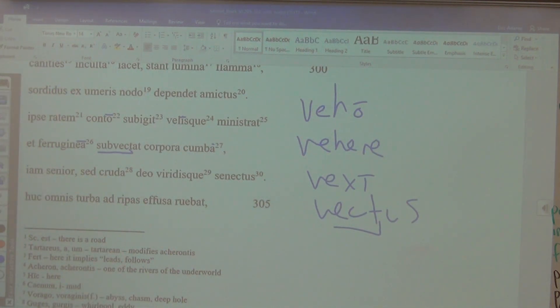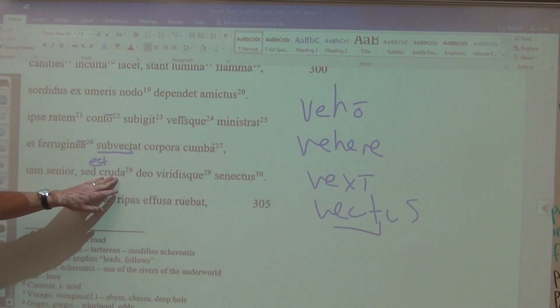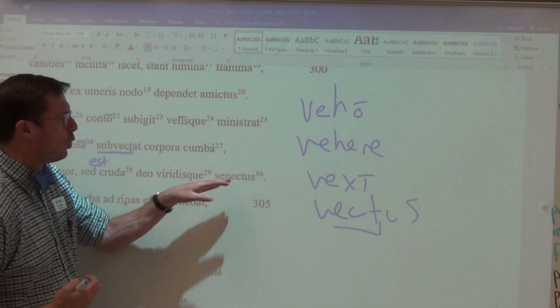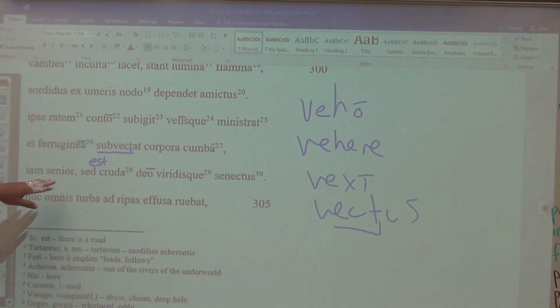And he carries the bodies on the rust-colored boat. Think about all the different words that we have for boat: raft, boat, skiff, dinghy, the list can go on. Now older, and so we're describing the fellow Charon, but there is, you imply an est, there is a rough-and-tumble, a crude and green old age for the god. And so he is old, but he's kind of a rough-and-tumble sort of old. It is a green old.